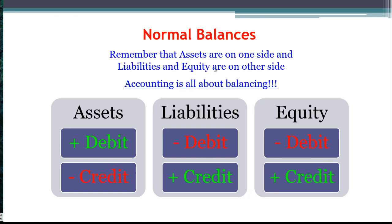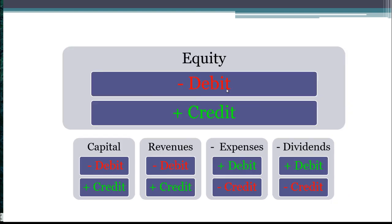We know that assets are on one side of the equation and liabilities and equity are on the other side, so whatever rule applies to assets, the opposite applies to liabilities and equity. The rule for assets is that they are increased by debits and decreased by credits. Liabilities and equity overall are the exact opposite. Breaking equity out further, capitals and revenues increase equity, so they also have normal credit balances. However, expenses and dividends decrease equity, so they have a normal debit balance — that same debit that increases those two accounts decreases equity overall.